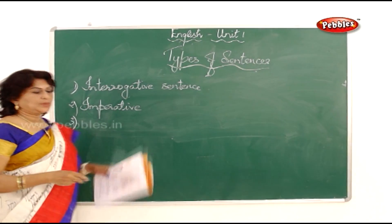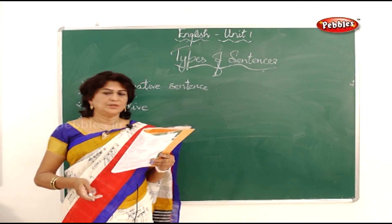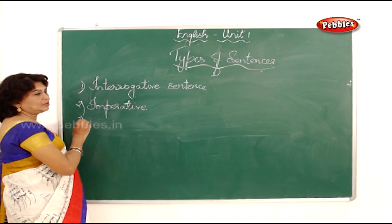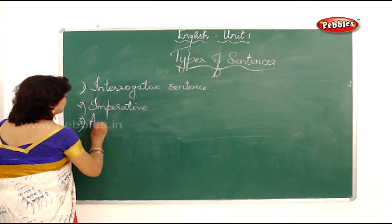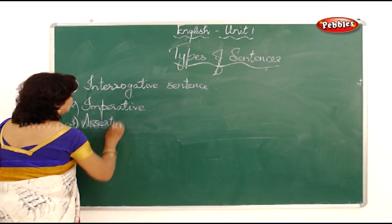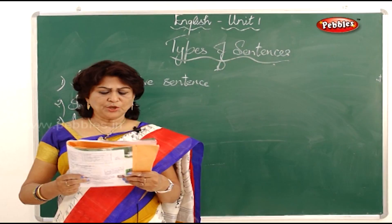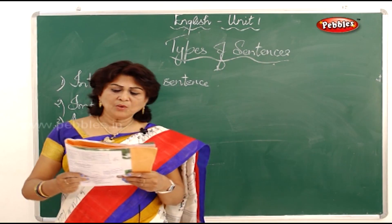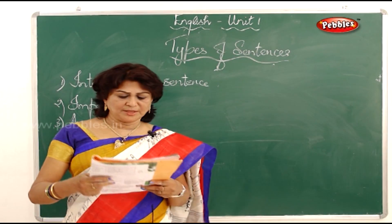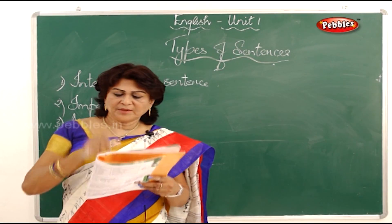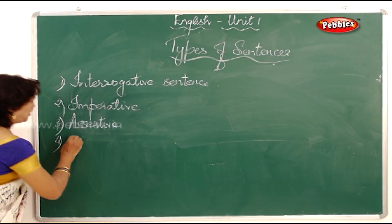Third: 'Chennai is the capital of Tamil Nadu' — it is a statement, so it is a declarative sentence; here we write it as assertive. Fourth: 'how great, we have won the match' — it ends with an exclamatory mark, so it is an exclamatory sentence.